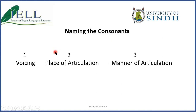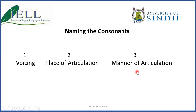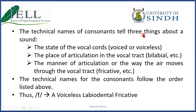To name a consonant we need all three characteristics. First of all, we write whether it is voiced or voiceless. Then we state its place of articulation — for example, bilabial, velar, palato-velar, or whatever the place of articulation is for that sound. Then we write about its manner of articulation — whether it is plosive, fricative, affricate, and so on. The technical names of consonants tell all three things: the state (voiced or voiceless), their place of articulation, and the manner in which they are articulated.